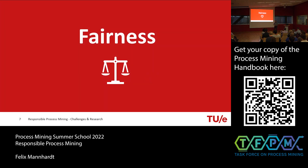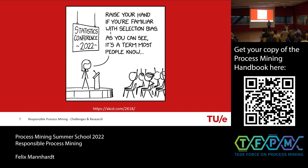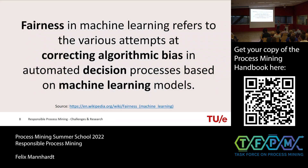Let's start with fairness. Fairness in machine learning refers to attempts to correct algorithmic bias in automated decision-making processes based on machine learning models. But that raises the question: what is algorithmic bias? The definition doesn't really help you understand the problem.